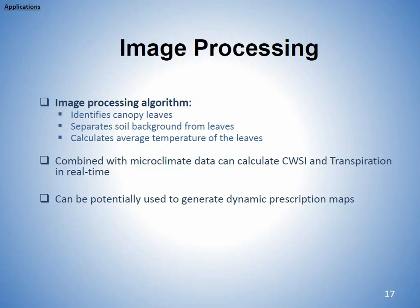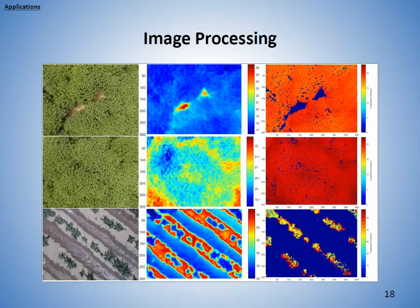We also tried to remove shaded leaves, since shaded leaves don't transpire the same way sunlit leaves do. Potentially, if we combine this data with microclimate data, we can calculate the crop water stress index and transpiration in real time, and it can also be used for generating dynamic prescription maps. These are sample processed images — from the left: RGB, thermal, and then a masked thermal image. You can see that it works with different canopy colors.